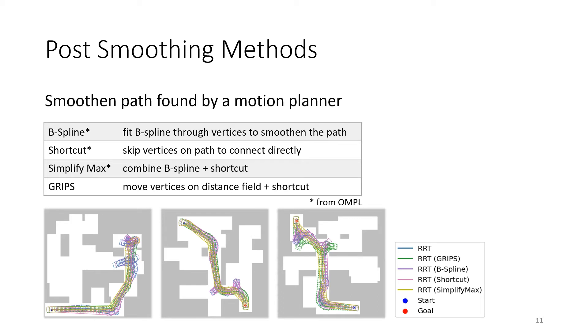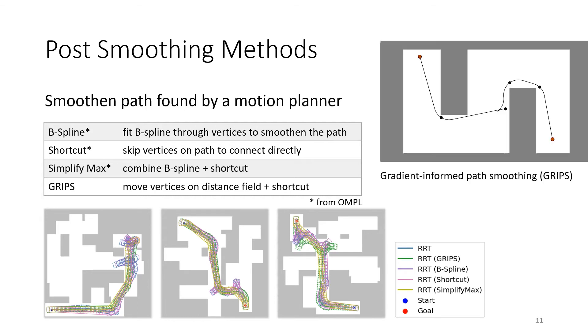Shortcut tries to skip vertices on the path to connect them directly. SimplifyMax combines B-spline and shortcutting. Finally, gradient-informed path smoothing, or grips, moves vertices on the obstacle distance field gradient and uses shortcutting to smoothen the path.